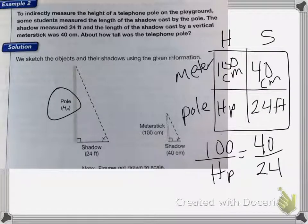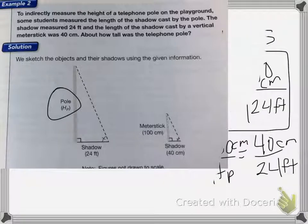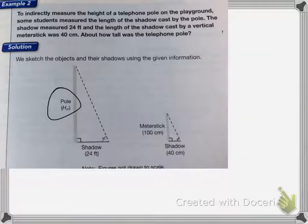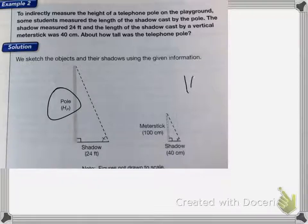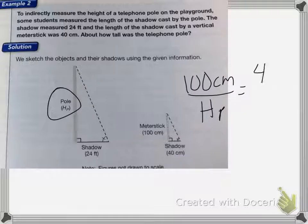So my proportion now is going to be 100 over the height of the pole equals 40 over 24. 100 centimeters over the height of the pole equals 40 centimeters over 24 feet.